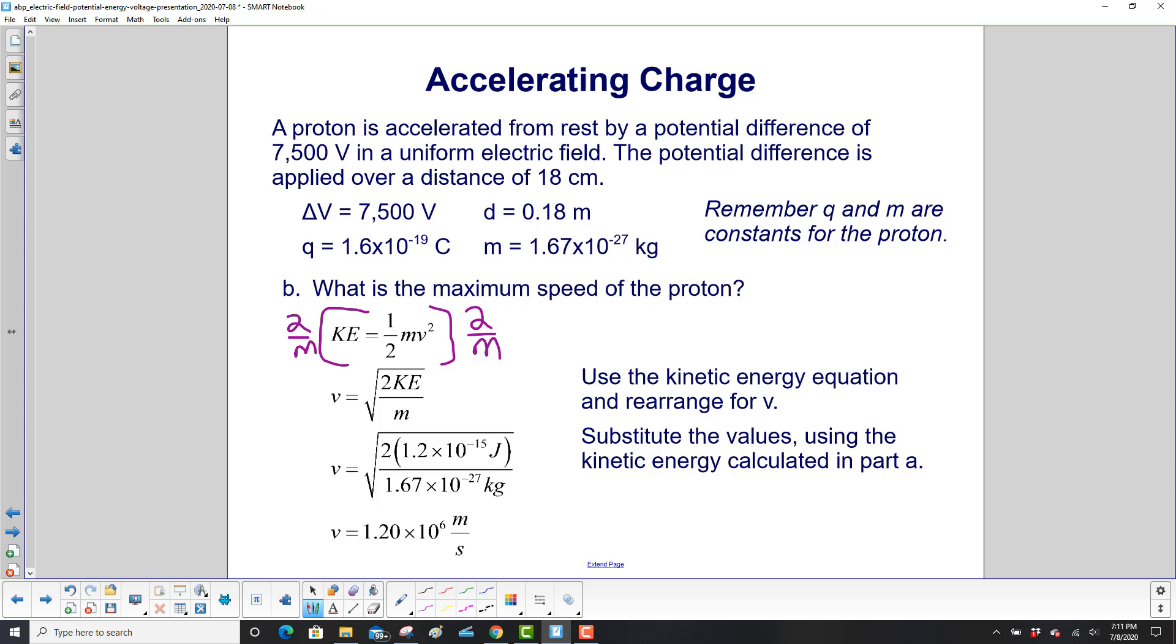And then take the square root of both sides. And you get velocity is the square root of 2 KE over m. Here's our kinetic energy from the previous slide. Here's the mass of the proton. And we get a velocity of 1.20 times 10 to the 6 meters per second.